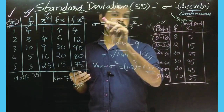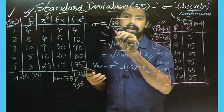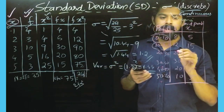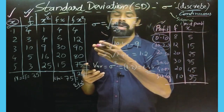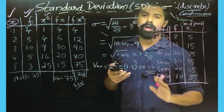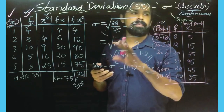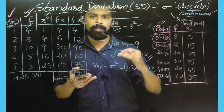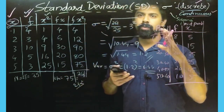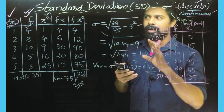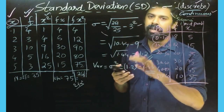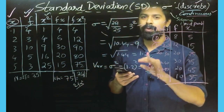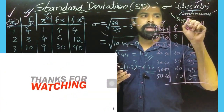The formula is: sigma equals the square root of sigma fx² divided by sigma f, minus x-bar squared. This is the calculation of x-bar. We need to do two things: find the standard deviation and find the variance. We learned the standard deviation from the discrete type data, and in this class we will apply it to continuous data.